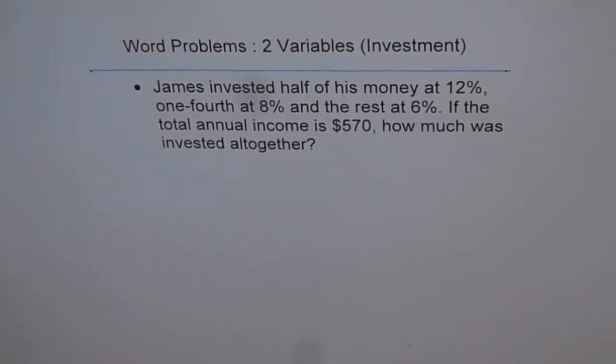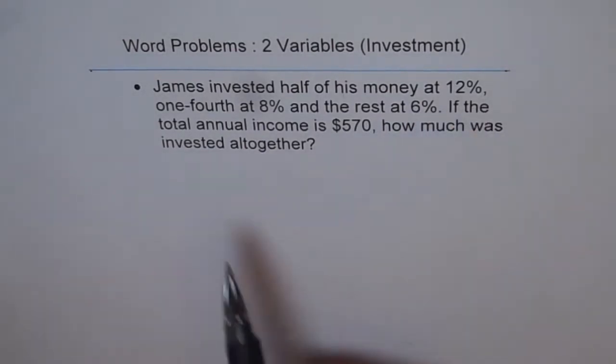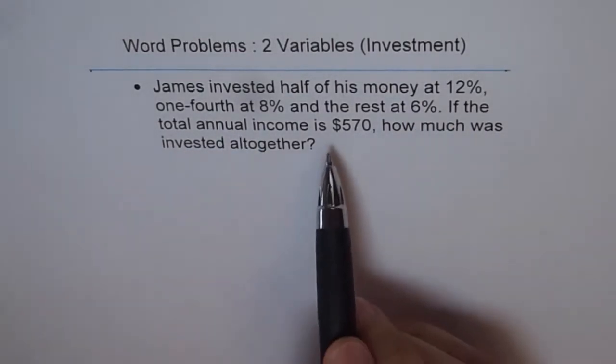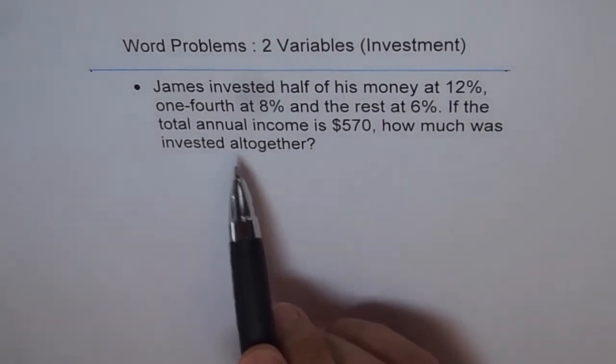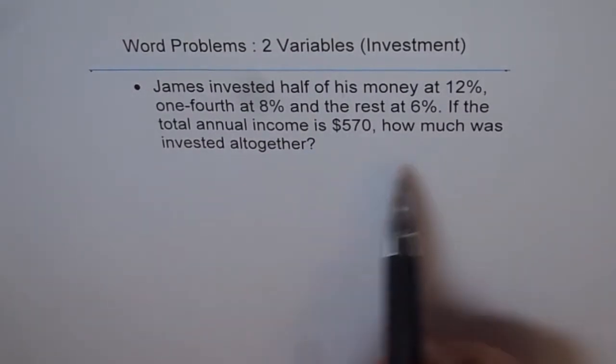Now let's move on to some word problems dealing with investments. The question is: James invested half of his money at 12%, one-fourth at 8%, and the rest at 6%. If the total annual income is $570, how much was invested altogether?